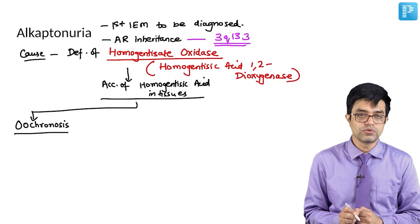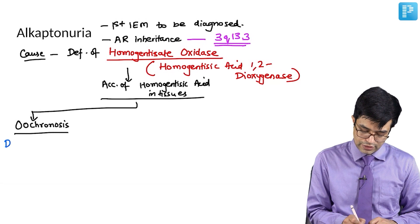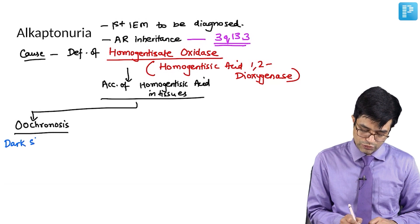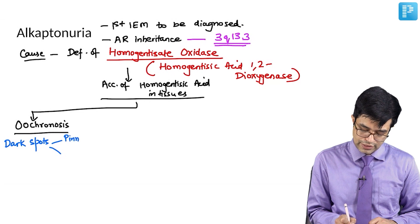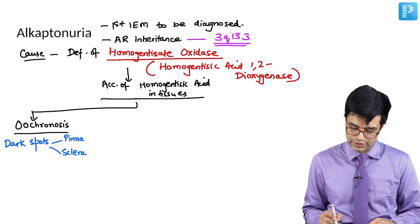What will happen in ochronosis? There will be dark patches or dark spots present on the pinna as well as on the sclera of the eye. So, first thing is ochronosis.